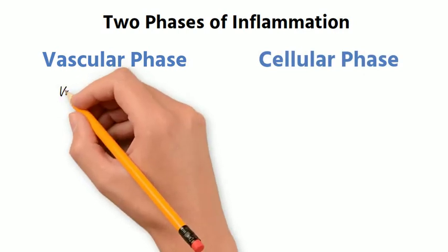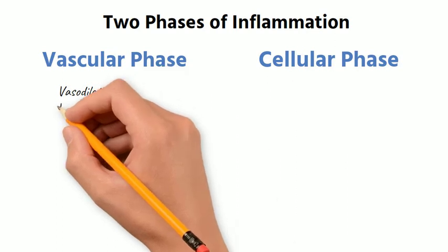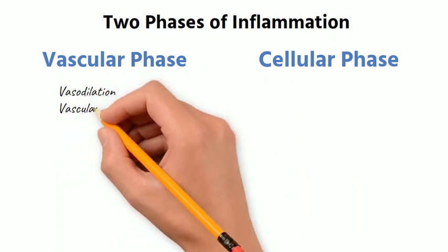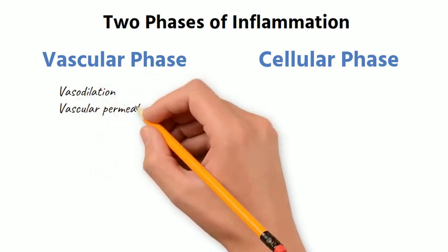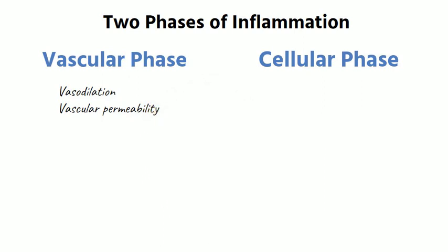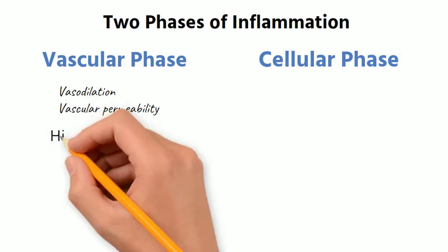In the vascular phase of inflammation, there is vasodilation and increased capillary permeability. This increases blood flow to the site of injury and allows movement of fluid and proteins into the tissue. These processes in the vascular phase lead to the cardinal signs of inflammation: redness and warmth due to vasodilation, and swelling and pain due to vascular permeability.